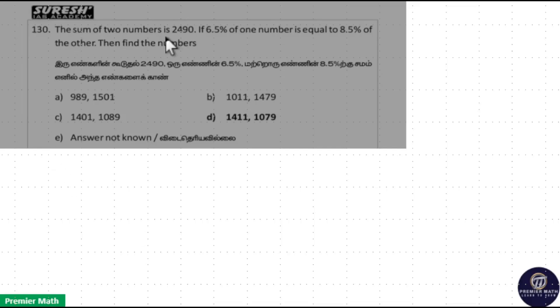The sum of two numbers is 2490. If 6.5% of one number is equal to 8.5% of the other, then find the numbers. Consider the numbers as x and y, so x plus y equals 2490.